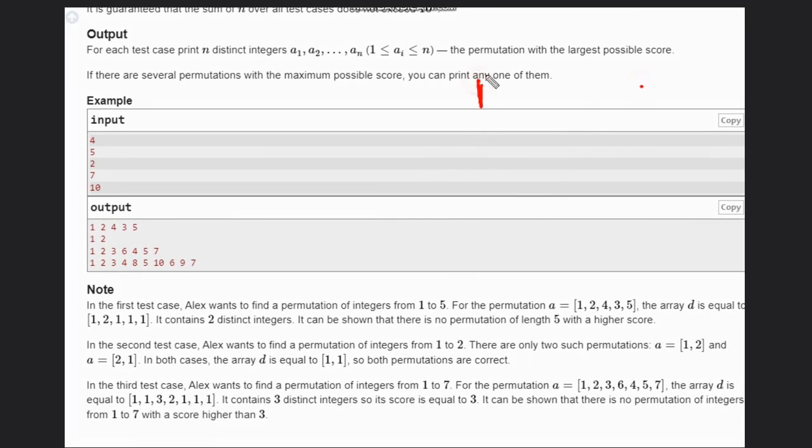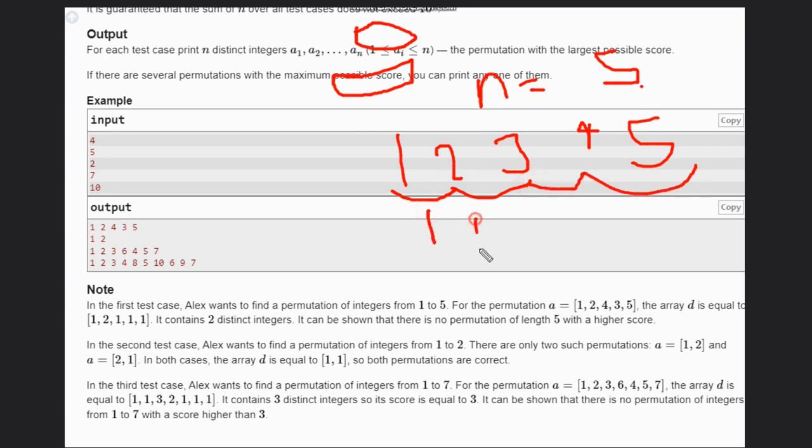Let's see an example. If you can see this example where n equals 5, what do you have to do? Let's suppose we take this sequence: 1, 2, 3, 4, 5. If you take this sequence, the GCD of all consecutive numbers, based on the condition given, if you take all the consecutive numbers and take the GCD, it will be 1, 1, 1, 1, all will be 1. So the score is 1 only, but we have to maximize this.